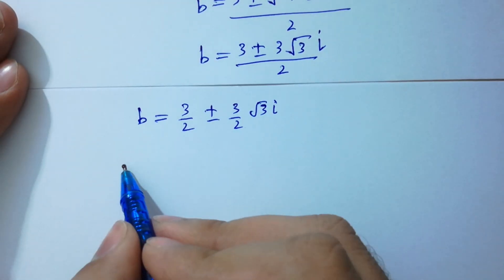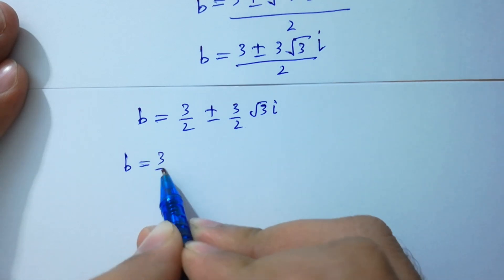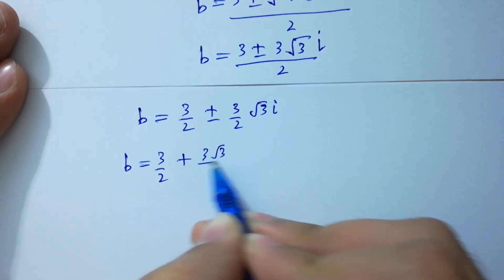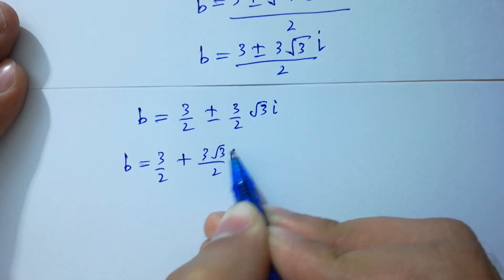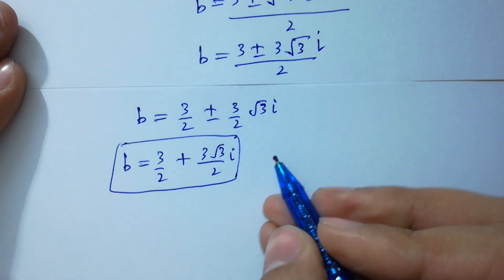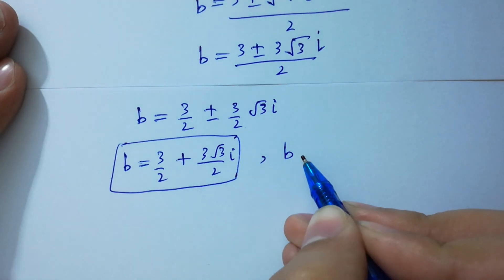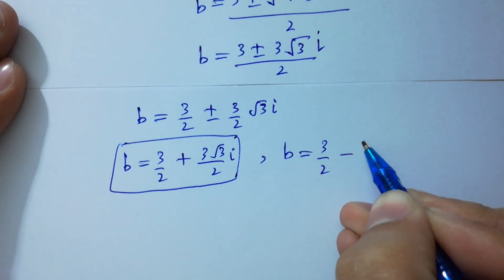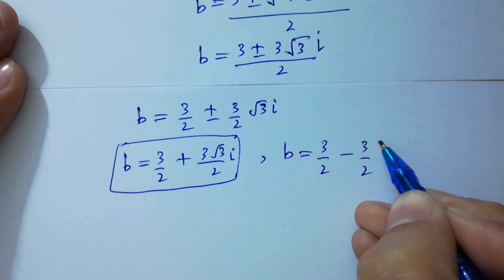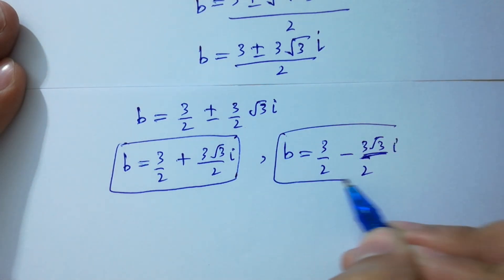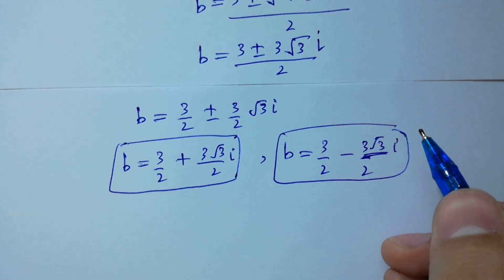So the 2nd complex solution is B equals 3 over 2 plus 3 square root of 3 over 2 times i, and the 3rd solution is B equals 3 over 2 minus 3 square root of 3 over 2 times i.